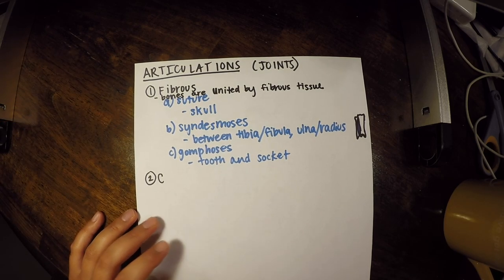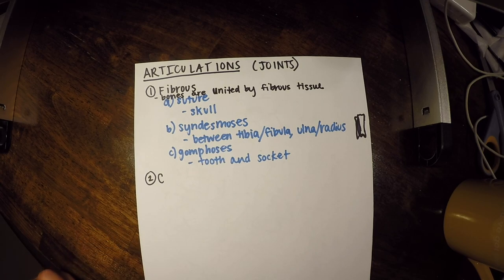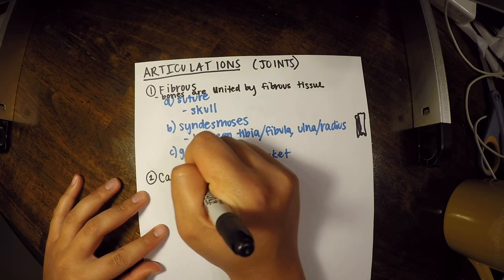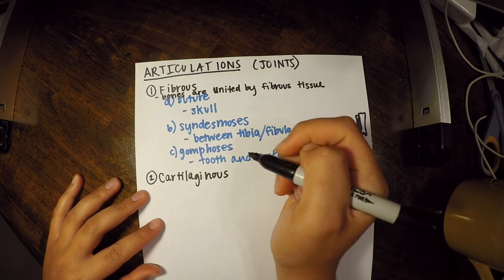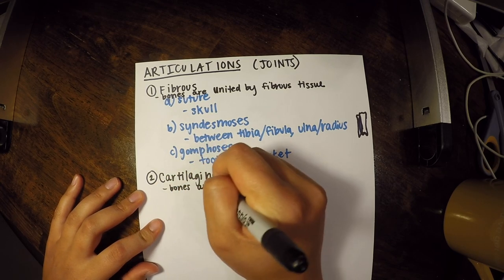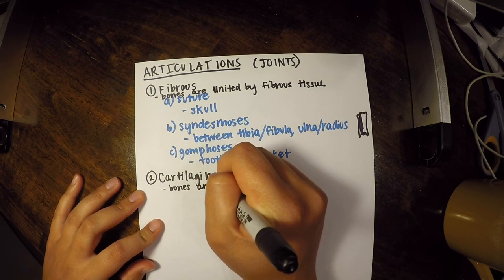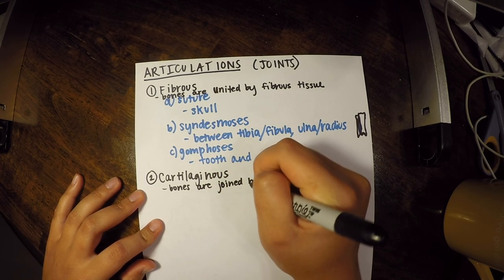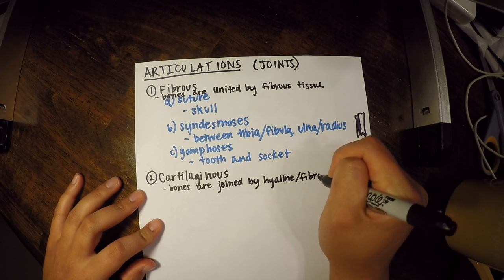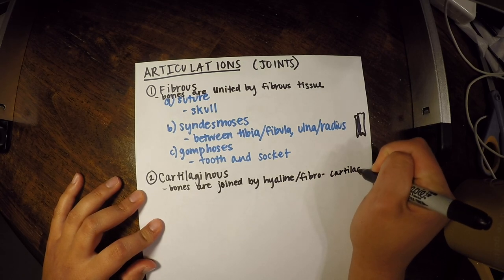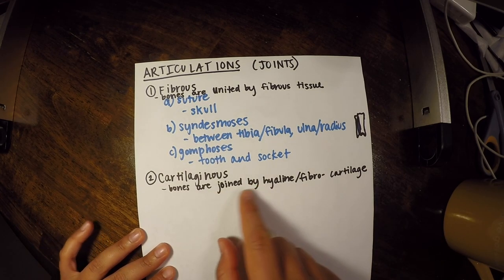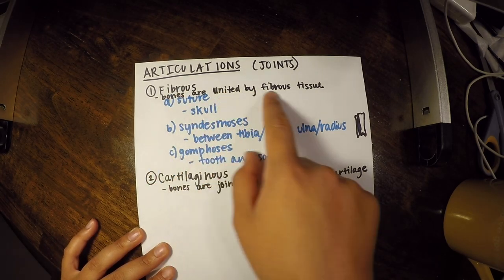Our second category is cartilaginous joints. Bones are joined by hyaline or fibrocartilage. The name makes sense — what's joining things together is cartilage, just as with fibrous joints it's fibrous tissue.